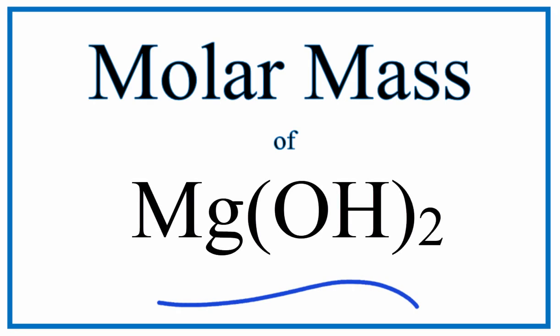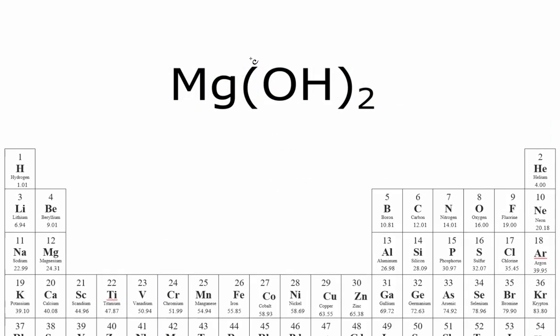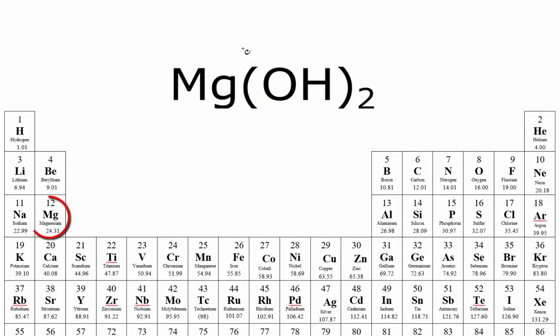To find the molar mass for Mg(OH)₂, magnesium hydroxide, let's first find the atomic masses for each element. For magnesium, we have 24.31, oxygen is 16.00, and hydrogen is 1.01.